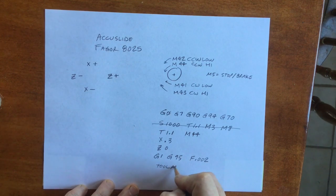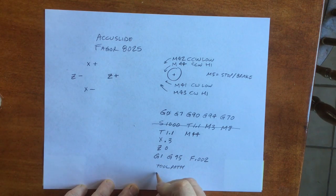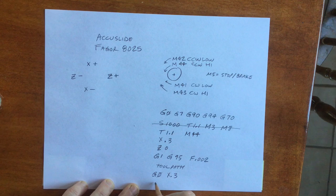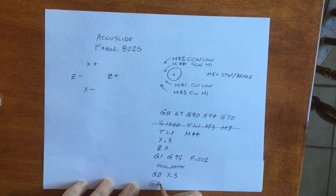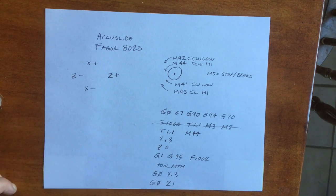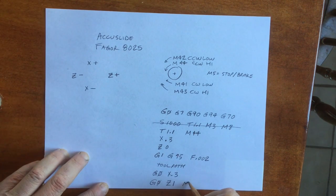Here's where the tool path goes. Once the cutting is done, we go back to rapid travel and safely get the tool off the part. Often this involves an X move, then a Z move.